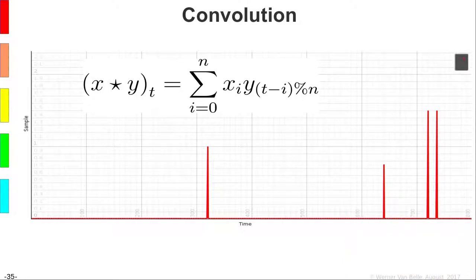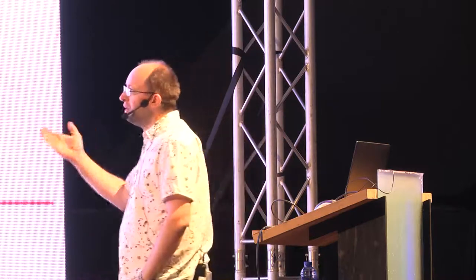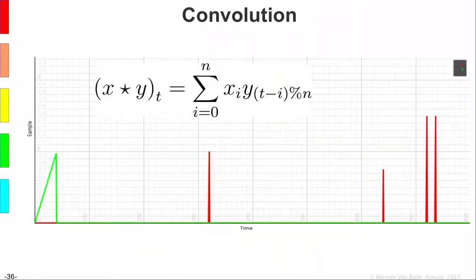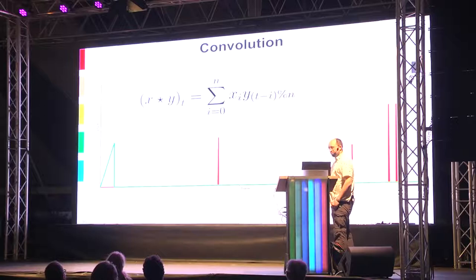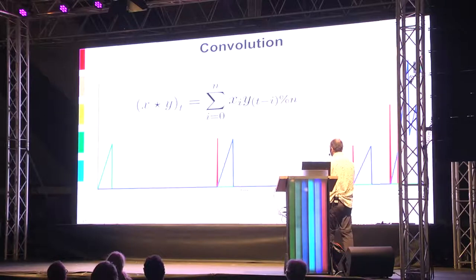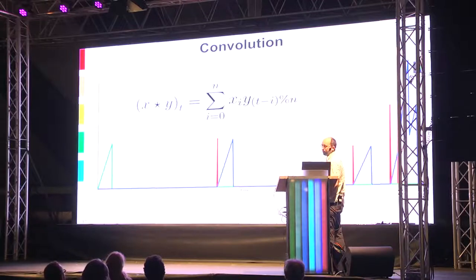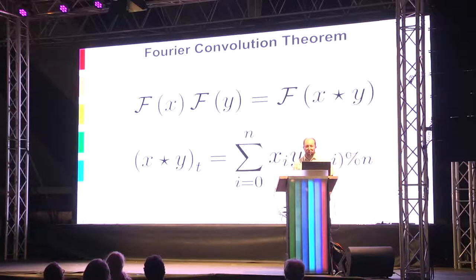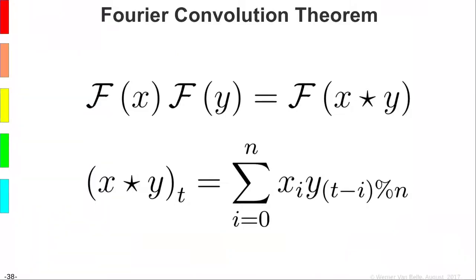To explain what an extracted peak means, I need to explain convolution. Convolution takes two signals: you move one signal to each position of the other, multiply by the value there, and sum all the time-shifted results. A simple implementation takes O(n²) operations. Fourier analysis helps: the convolution theorem states that the spectrum of a convolution equals the product of the individual spectra.